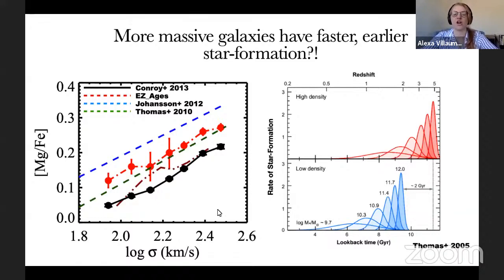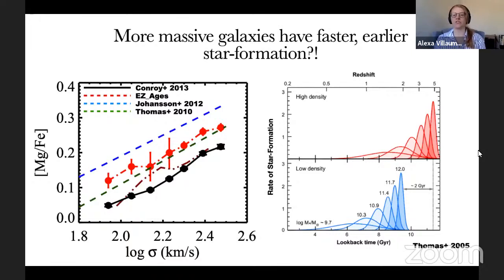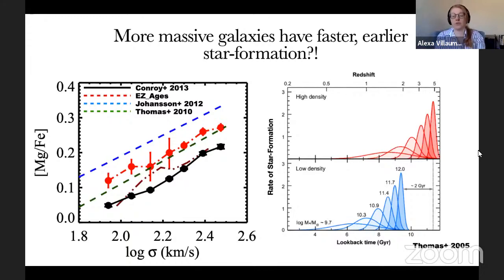The implication is that the most massive galaxies form their stars fastest, earliest, and cut off star formation earliest — which is very much against what we'd expect from ΛCDM, where we'd think these things should have come together later than smaller galaxies. What people think has happened to resolve this anti-hierarchical behavior is that the cores of these massive early-type galaxies formed very early and very quickly, but have since been building up their stellar halos.